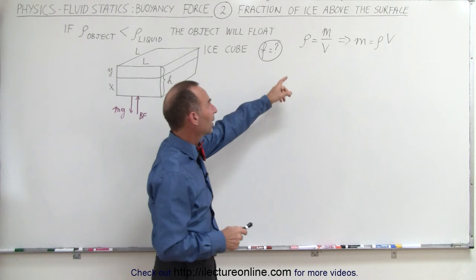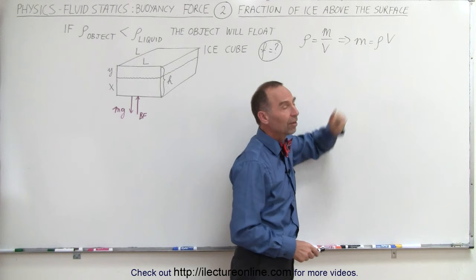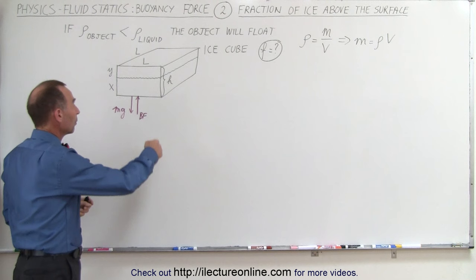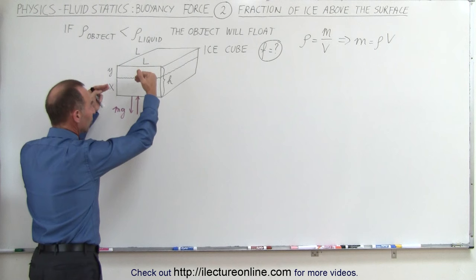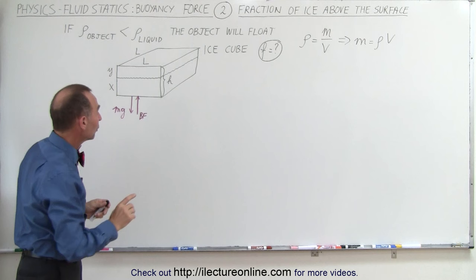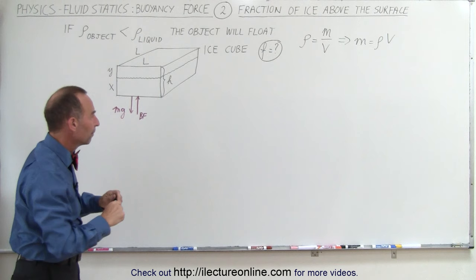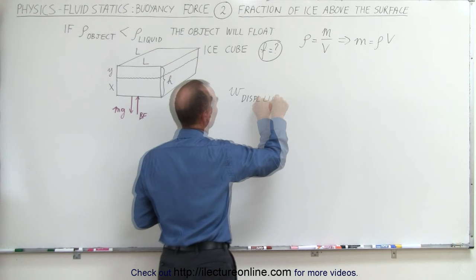We use the concept that the density of an object is equal to the mass divided by the volume, so we can write that mass equals density times volume. We realize when an object is floating that the density of the object is less than the density of the liquid. Also, the buoyancy force — which pushes the object up and keeps it from sinking — is going to be equal to the weight of the object. And we know that the buoyancy force is also defined as the weight of the displaced liquid, so the weight of the displaced liquid is equal to the weight of the object.